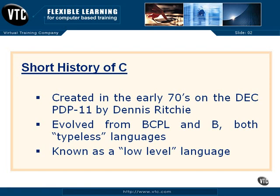Let's take a little tour in the Wayback Machine and do a short history of the C programming language. C was originally created in the early 70s, around 1972, by Dennis Ritchie on the Digital Equipment Corp PDP-11 system.